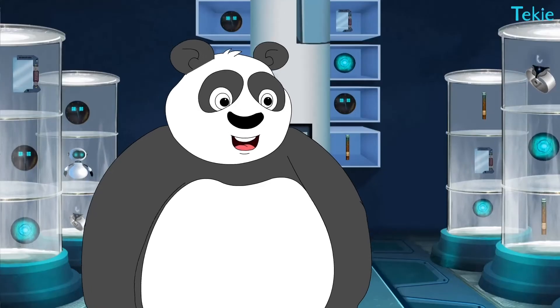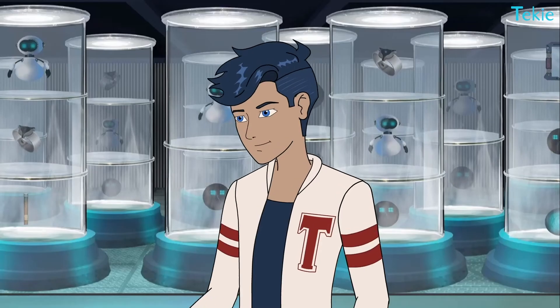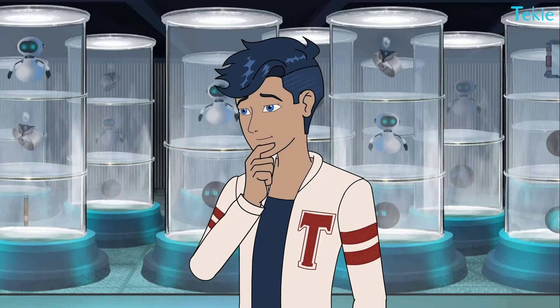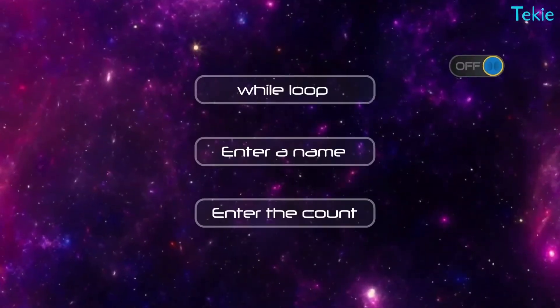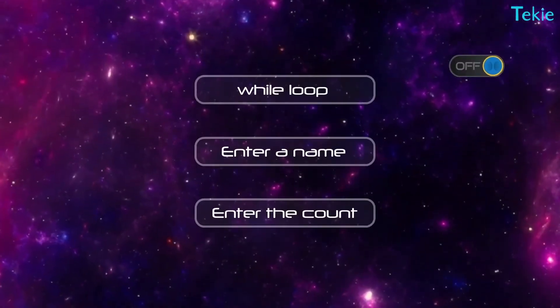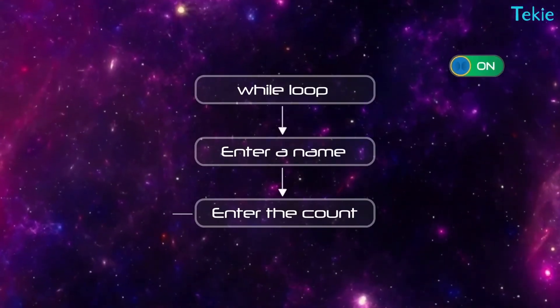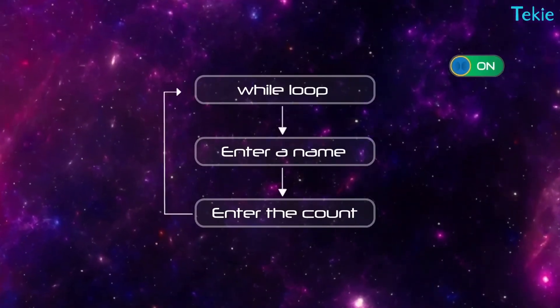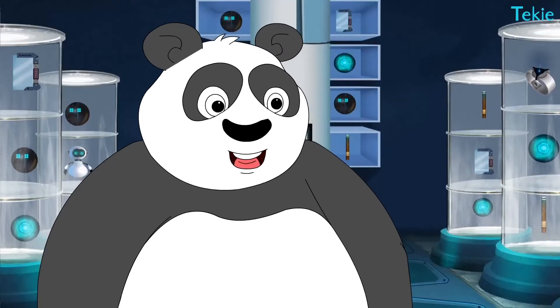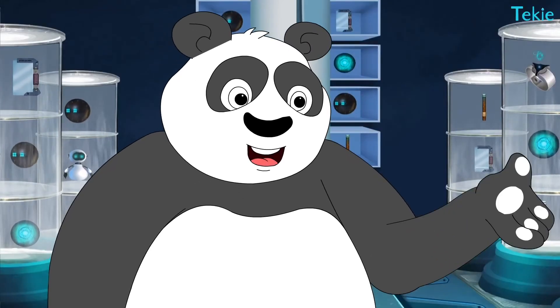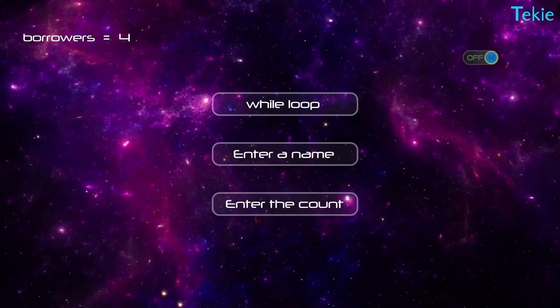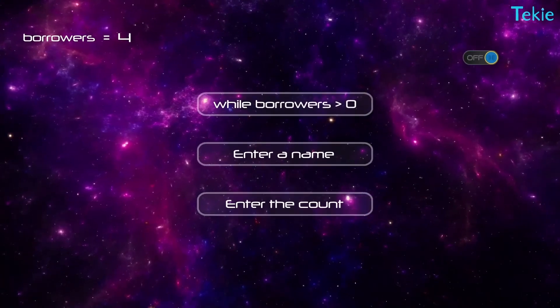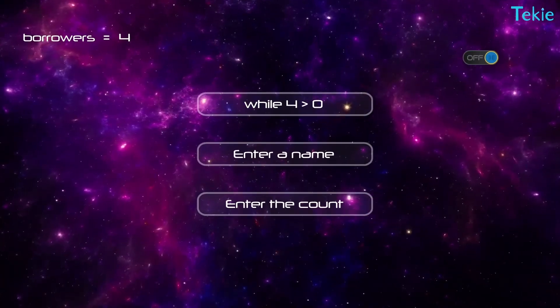But what if there's more than one borrower? Good question. If there's more than one, we ask for names and counts inside a while loop. The loop should continue till there's no more borrower.